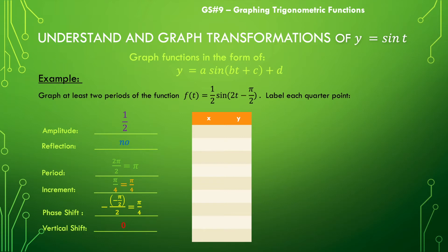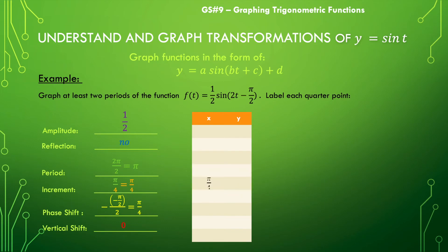So let's go ahead and start with our phase shift of pi over 4. We're going to count by the increment, which is also pi over 4, to get some more x values for our graph. Pi over 4 plus pi over 4 is 2pi over 4, otherwise known as pi over 2, and then 3pi over 4, and then 4pi over 4, also known as pi.